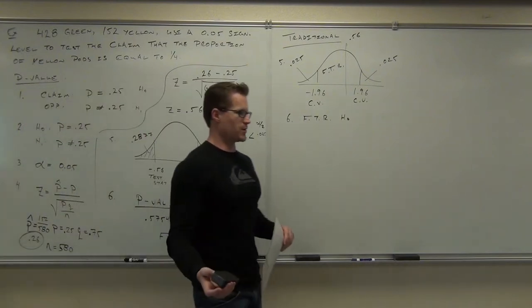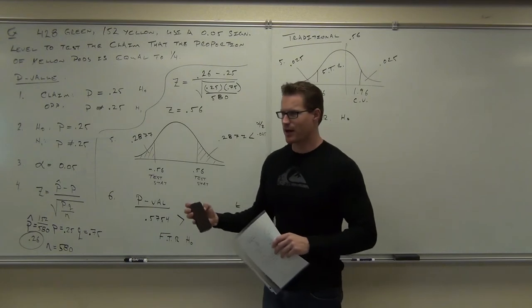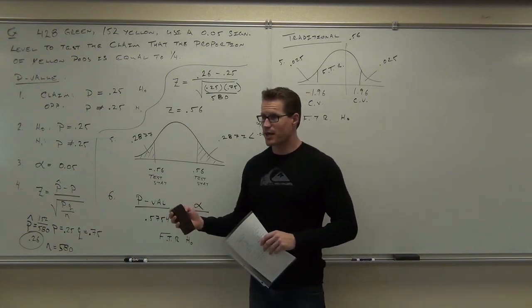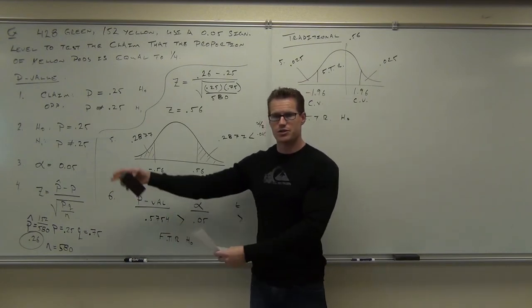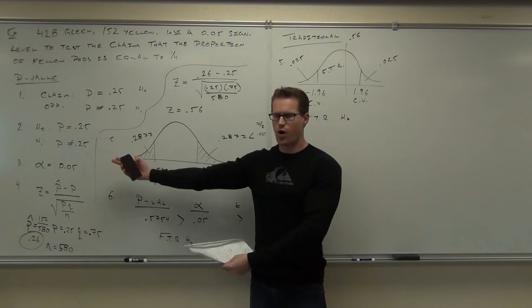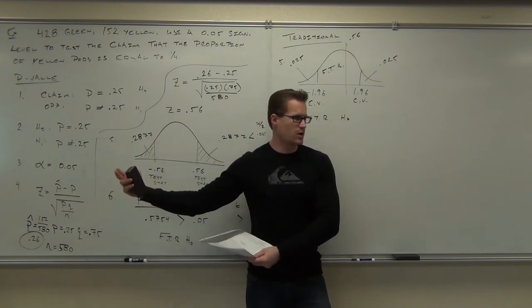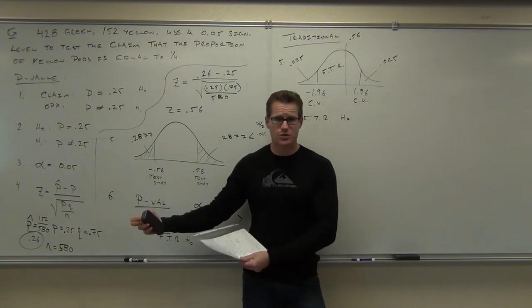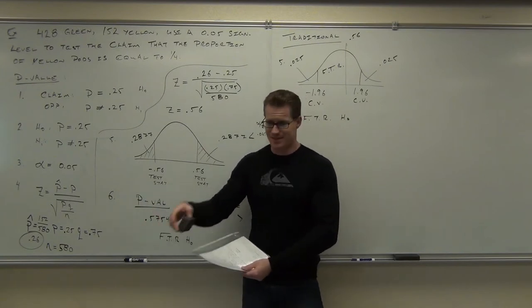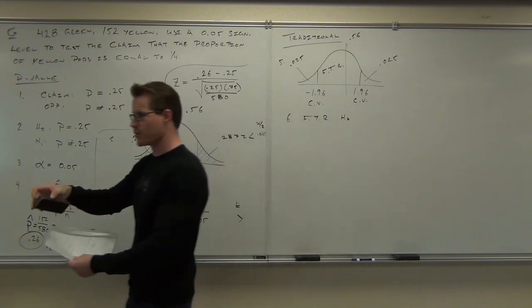So we're going to move out of proportion land. We're going to talk about mean land. In proportion land, you know one thing - you know Z. Proportions all deal with Z. So if you hear about a proportion and you're testing a claim or doing a confidence interval about proportions, what are you going to use? That Z table that we had, the standard normal curve.